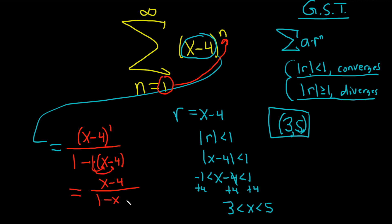Negative 1 times negative 4 is positive 4. So this is equal to x minus 4 over 1 plus 4 is 5, and then we have minus x. And this would be the sum of the series for these values of x.